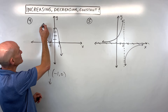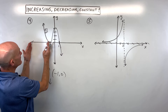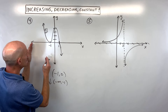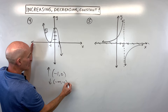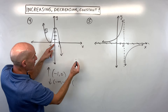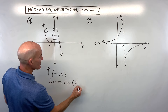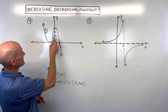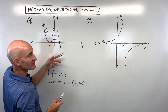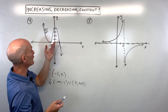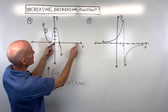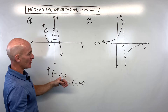Where is the graph decreasing? You can see from negative infinity to negative one. Remember, we're using the x values. And then union also from zero onward — from zero to positive infinity. Don't be confused and say from four to negative infinity or negative infinity to four — those are the y values. We're asking for what x values are the y values going down.